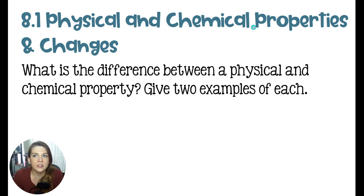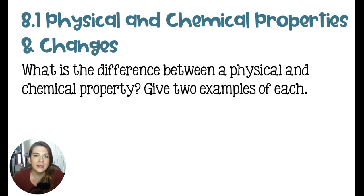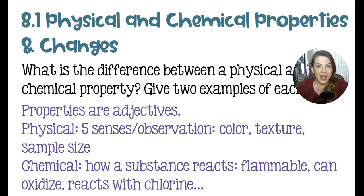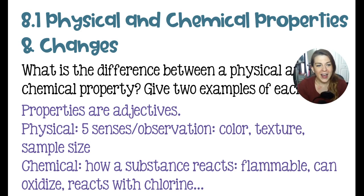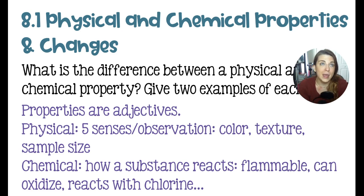The title of this slide is physical and chemical properties and changes. If you have an issue with any of these questions, go back to the relevant video for review. To begin: what is the difference between a physical and a chemical property? A property is like an adjective — it describes how a substance looks, smells, feels, its color, texture, and so on. A physical property is observed with the five senses. A chemical property describes how the substance reacts — for example, it's flammable, it can oxidize, or it may react with a particular chemical.